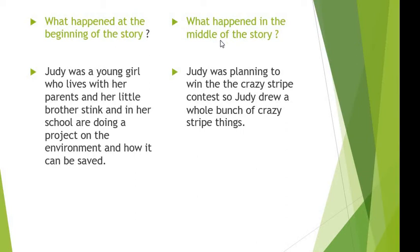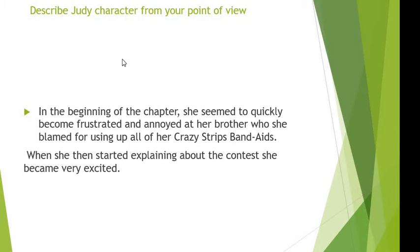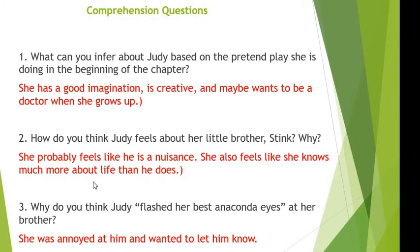Next question: what happened in the middle of the story? Judy was planning to win the crazy stripe contest, so Judy drew a whole bunch of crazy stripe things. And this question is: describe Judy's character from your point of view. In the beginning of the chapter, she seemed to quickly become frustrated and annoyed at her brother, who is blamed for using up all of her crazy stripes and band aids. When she then started explaining about the contest, she became very excited. These are comprehension questions.